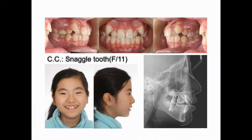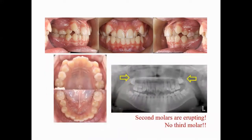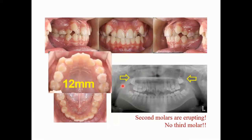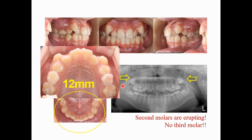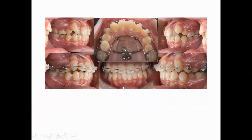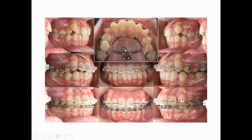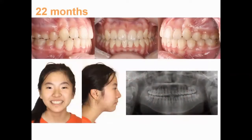Let's look at this very interesting case. An 11-year-old female whose chief complaint was high canines. Her skeletal relationship is normal, but she has a dentally Class 2 canine relationship and still had both maxillary primary second molars. In the panoramic view, second molars were not erupted and there is no third molar in the upper. There is severe crowding in the upper, which is 12 mm, and mild crowding in the lower arch.